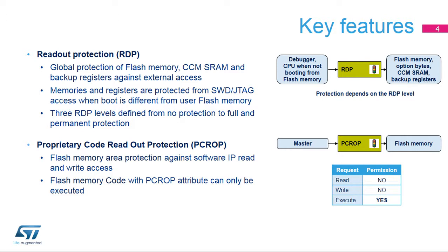Readout protection, or RDP, is a global mechanism that prevents external read access to flash memory, option bytes, CCM, SRAM, and backup registers. An external access can be gained by using a JTAG connector, a serial wire port, or the boot software embedded in SRAM. Three levels of RDP protection are defined, from level 0, which offers no protection at all, to level 2, which has full and permanent protection.